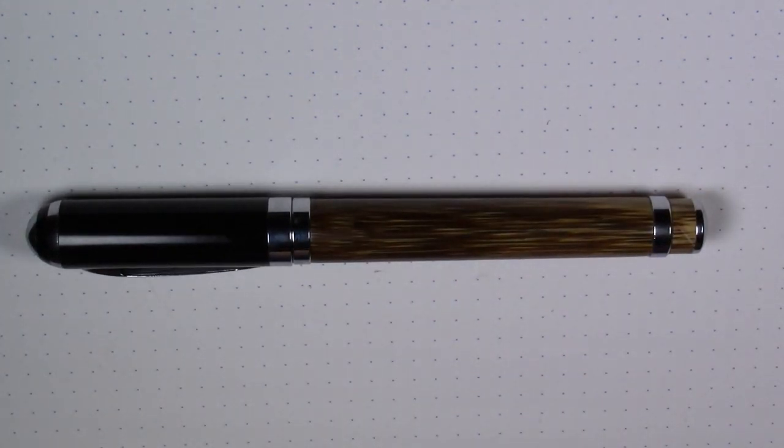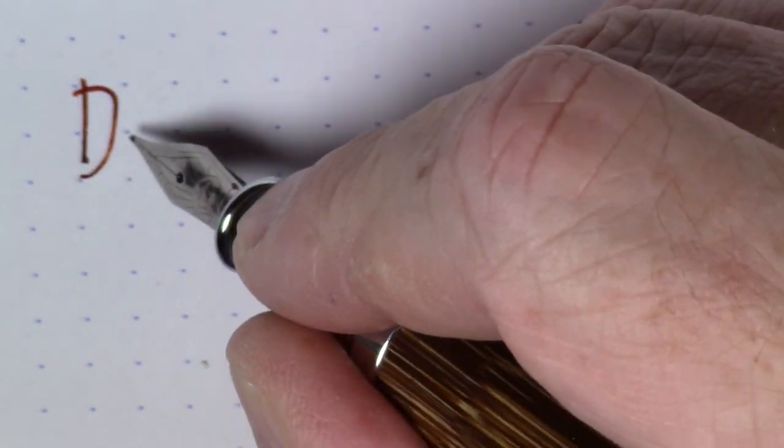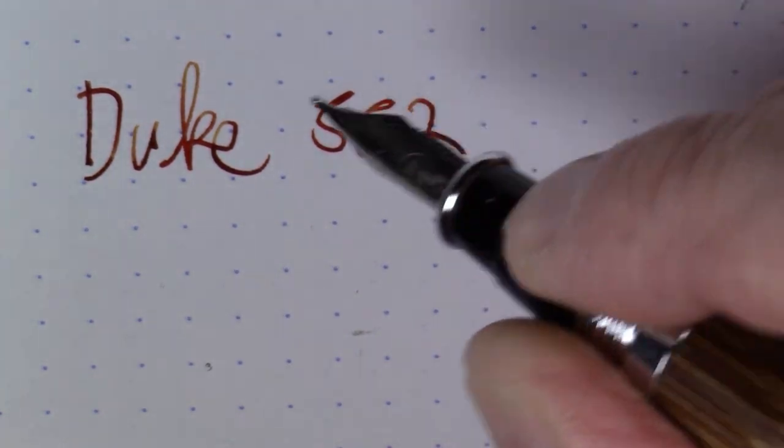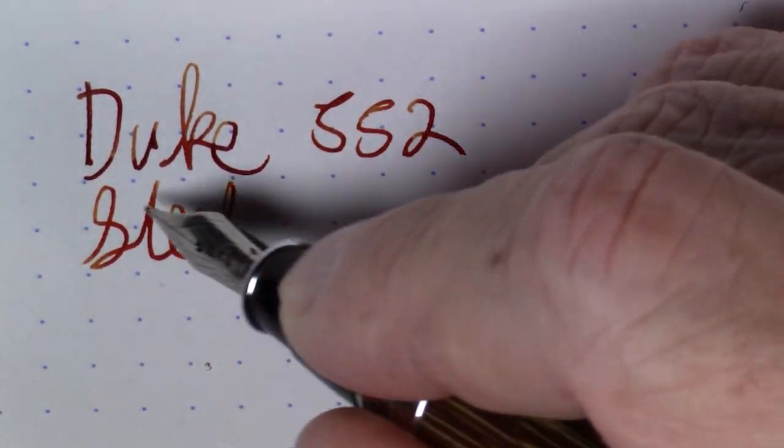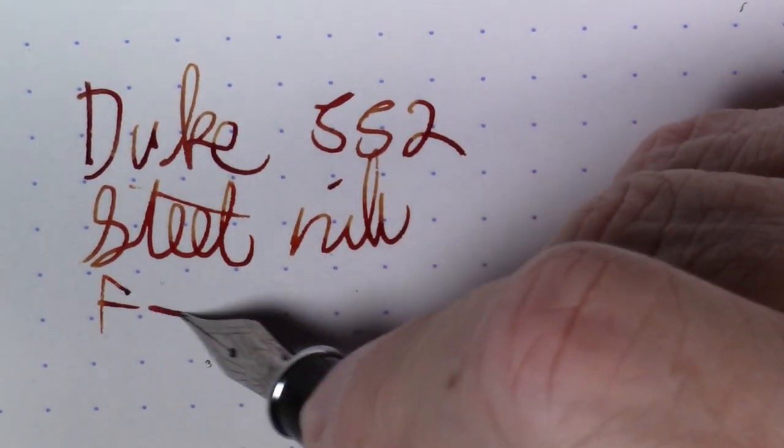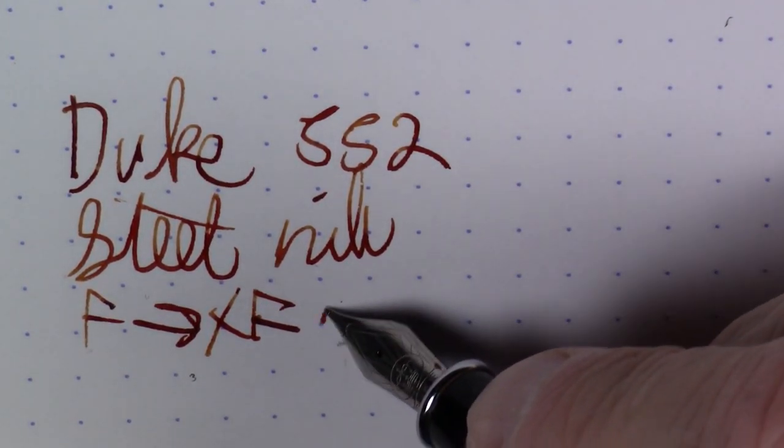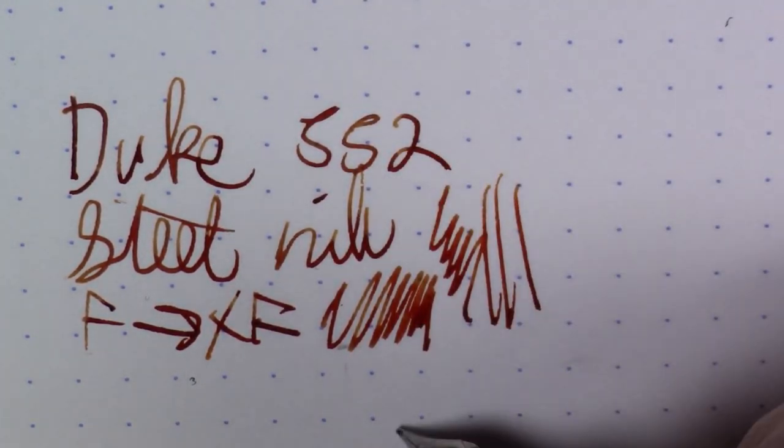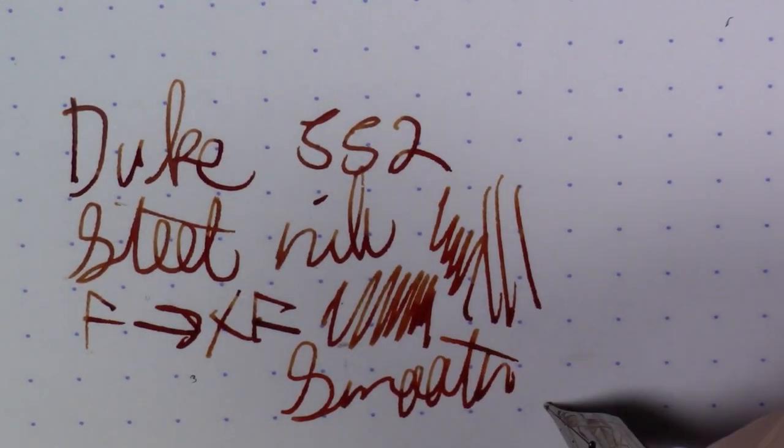Let's see how it writes. We're going to find that out right now. What we are writing with here is a Duke 552, and this is a steel nib that's somewhere in the fine to extra fine vicinity. And it flows really well. I like the flow in this. It's a very smooth nib, definitely smooth, and writes well.